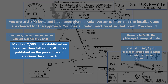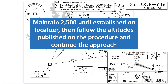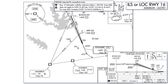We should stay at 2,500 and only descend once established on the approach. If cleared for the approach and you lose communications, you're expected to perform the approach as cleared. You can't descend right away, though, because you're not on a published segment of the approach — you're on a vector. Once inbound, we can descend to 2,000, which is glide slope intercept altitude.